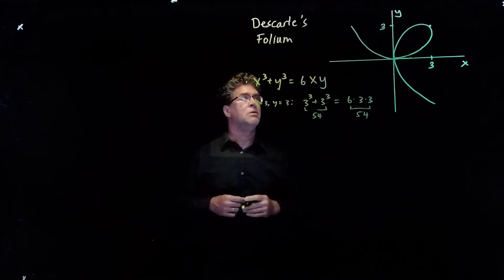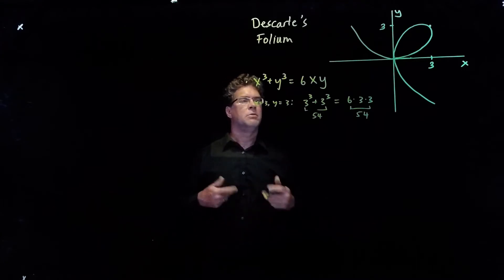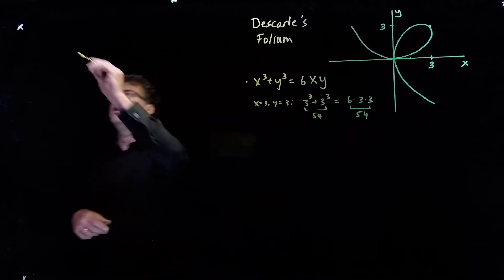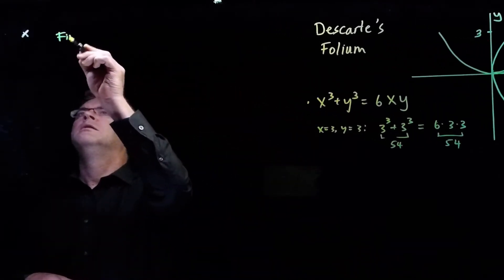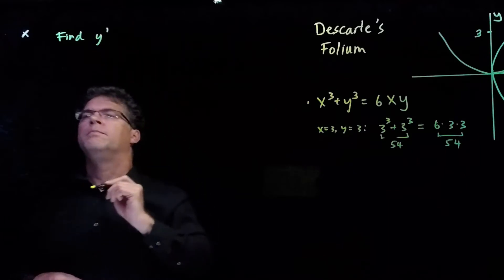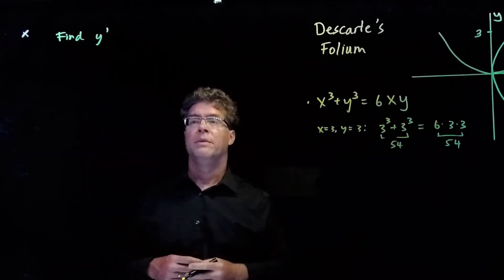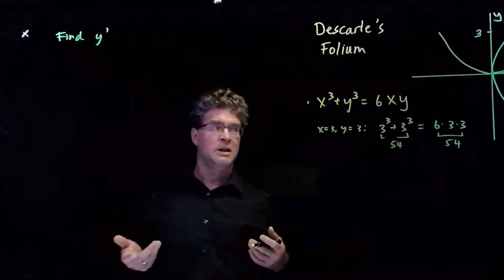The first thing we need is to calculate the derivative, dy/dx. And so we want to find y prime for this Descartes folium. The way we do this is through implicit differentiation.